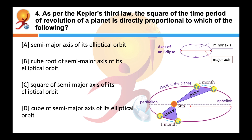As for Kepler's third law, the square of the time period of revolution of a planet is directly proportional to which of the following? Correct answer is D. Kepler's third law, or the law of harmony, states that the square of the time period of revolution of a planet is directly proportional to the cube of the semi-major axis of its elliptical orbit. It is also known as the law of periods.